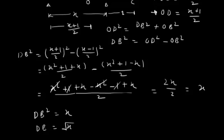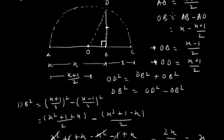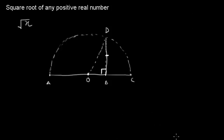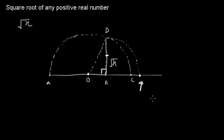So from here we learn that DB is equal to root x. Now we have the length of root x. We can draw this length on the number line by taking DB as the length of root x. This point on the number line is equal to root x. This way we can find out the square root of any positive real number and represent it on the number line.